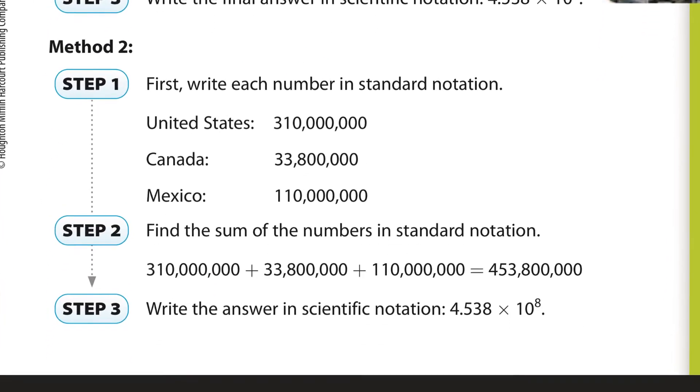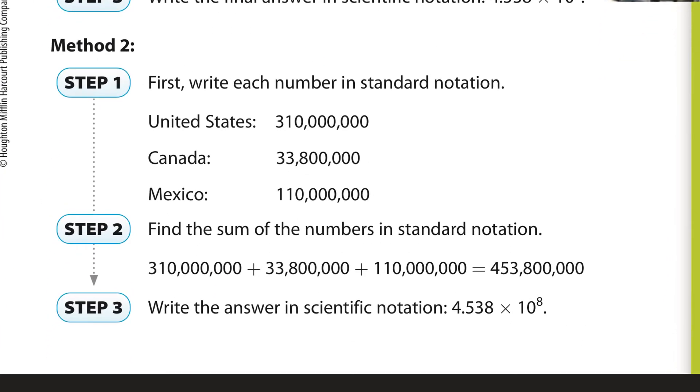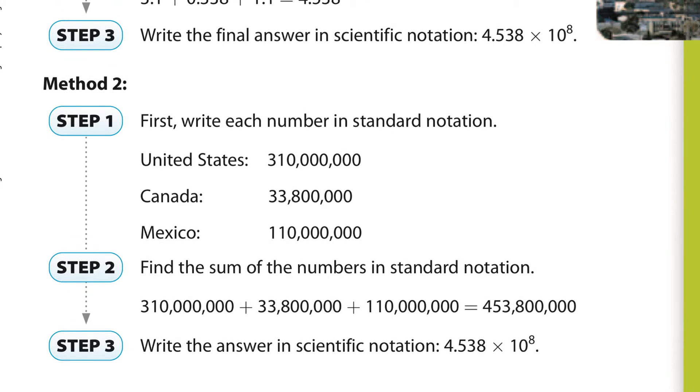And so that's one method. The other method is you can just write them all in standard notation. And the three numbers written in standard notation then write them out and then change this number into scientific notation. Either way, you still get the same answer as you can see here. This number is the same as that number.